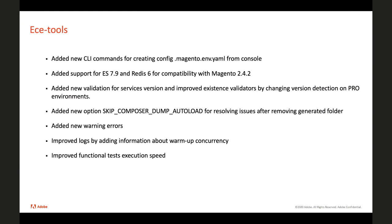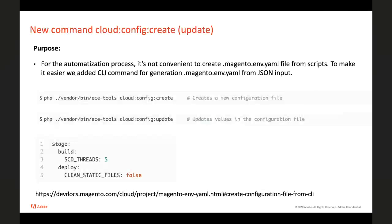We added new warning errors about Magento mode, improved logs by adding information about warmup concurrency, and improved functional test execution speed. Let's start with the new command called cloud:config:create. Per internal requests from our DevOps team, they built some automation around cloud tech and needed a way to generate magento.yaml. So right now you are able to set needed configuration using the new command and JSON input. You can update an existing file or create a new one — we have two options: create and update.